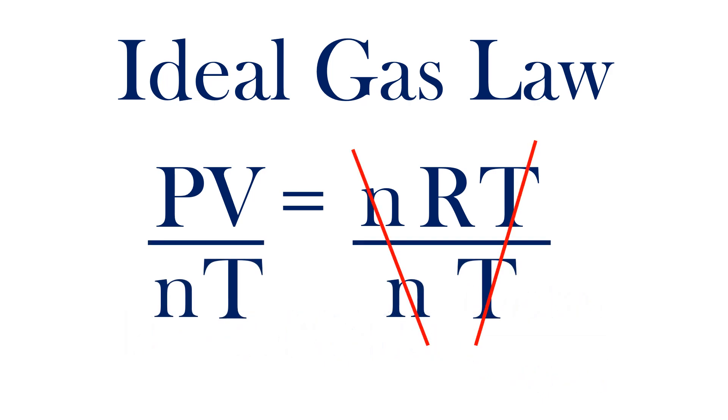With nT cancelling on the right, the ideal gas law constant will equal PV over nT.